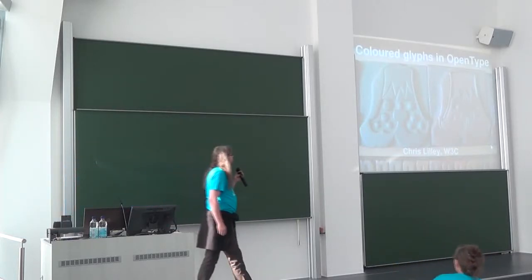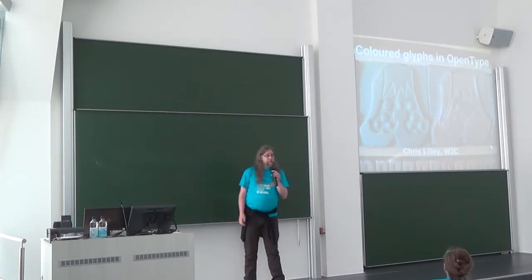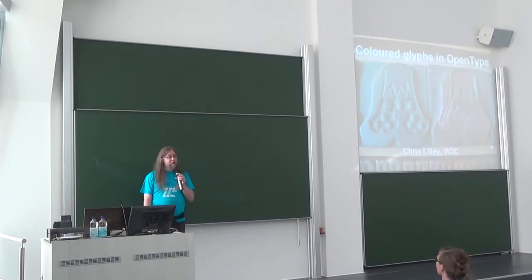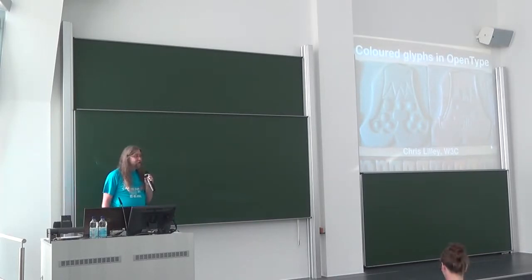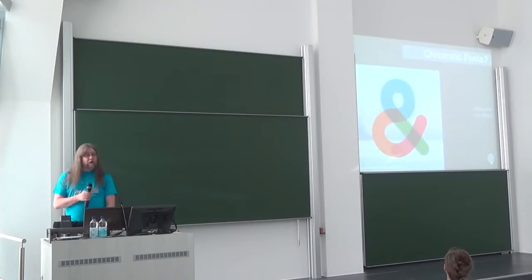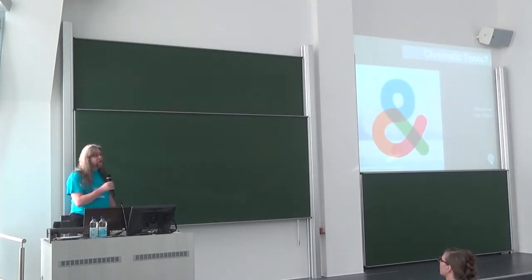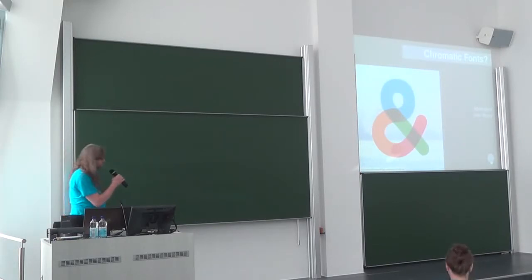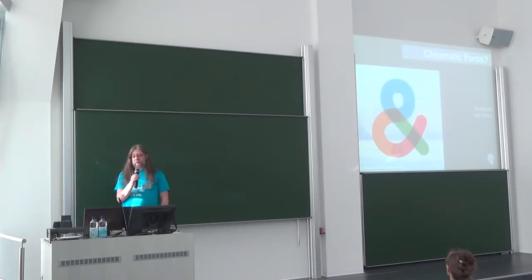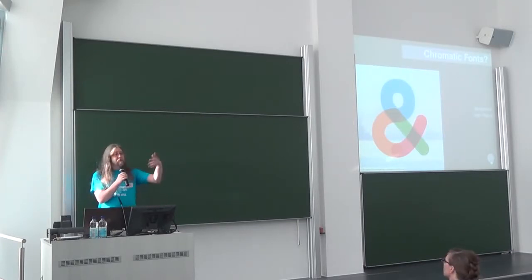So, colored glyphs and OpenType. I thought I would start with something that was not computer-related at all but with some nice carved wood stuff, just to show that colored glyphs aren't anything new really. Here's an example of what we might call a chromatic type - obviously the design has been split up into several pieces and there's some transparency so where they overlap you get a darker effect.